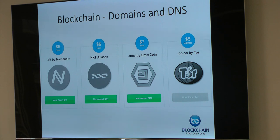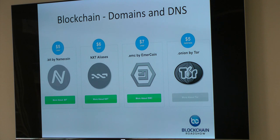There are a number of those out there — .bit, .EMC, .onion used for Tor/torrent networks, which are very often used in a dark manner for transactions on the dark web.